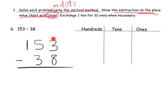First, we're going to think about the ones place and ask ourselves if we're going to need to unbundle. The answer is yes — we need to unbundle on this problem because we only have 3 ones and we're supposed to take away 8. So we're going to take a 10 and cash it in for 10 ones. That leaves us with 4 tens, and instead of 3 ones, we now have 13 ones. So now we have 13 minus 8 — we'll count up from 8: 9, 10, 11, 12, 13 — the answer is 5.